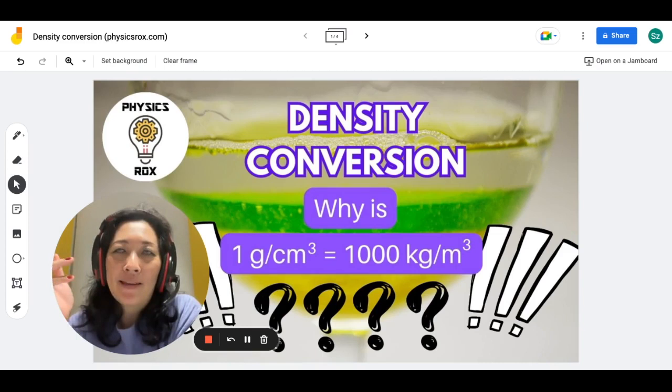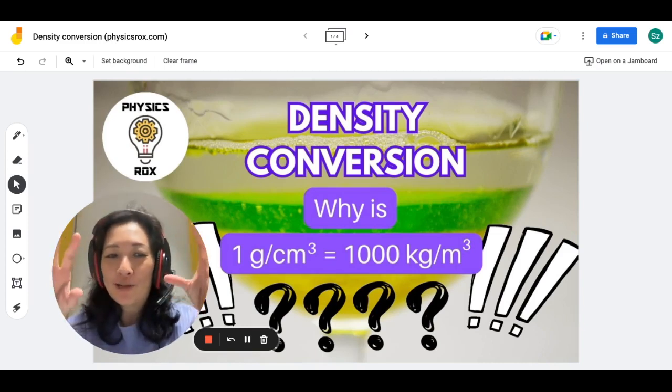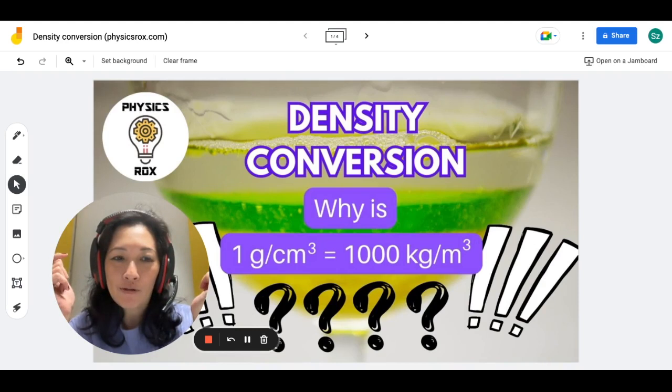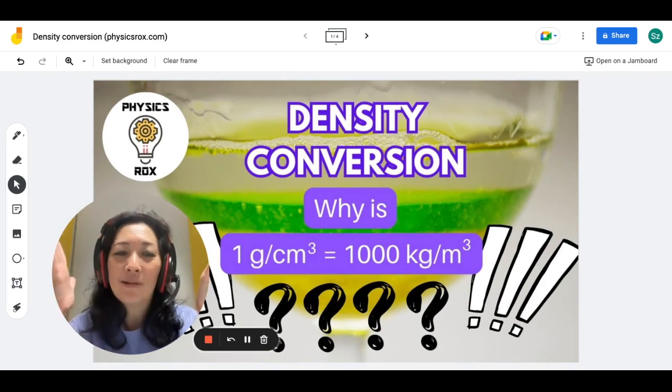This is something that a lot of students have questioned because when we had to apply the value of density in various questions, and the questions gave us the units in gram per cm³, they're like, why is 1 equal to 1,000? Question mark, question mark, exclamation mark, exclamation mark. So I'm here to show you why that is so.